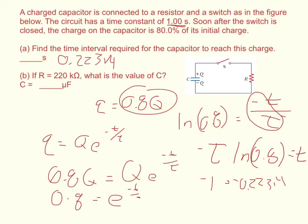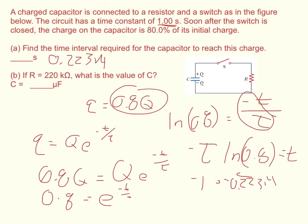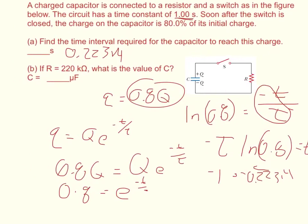Now the second part of this wanted to know, if R is 220 kilo-ohms, what is the value of C? We set up the equation that tau equals R times C, and then C equals tau over R.